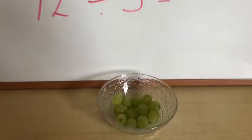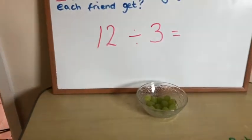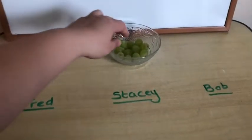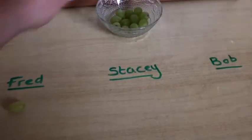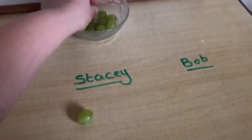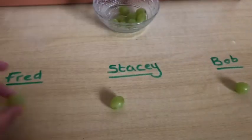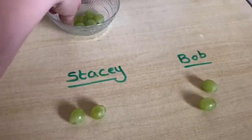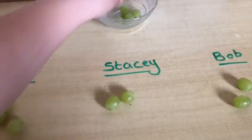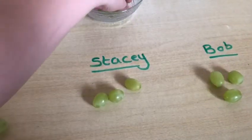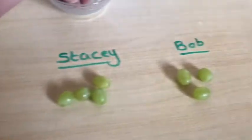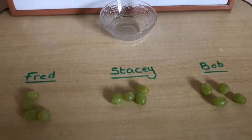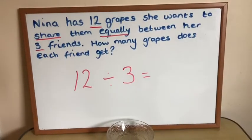Here I have Nina's 12 grapes and she's going to share them equally between her friends Fred, Stacey, and Bob. She gives one grape to Fred, one to Stacey, one to Bob — and repeats this until all grapes are shared out. Each of Nina's friends gets four grapes each. So the answer to our number problem is four.